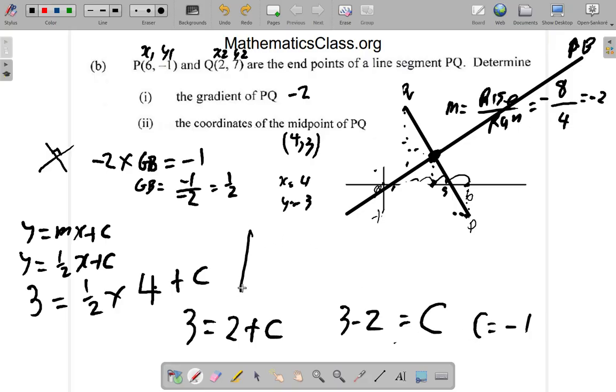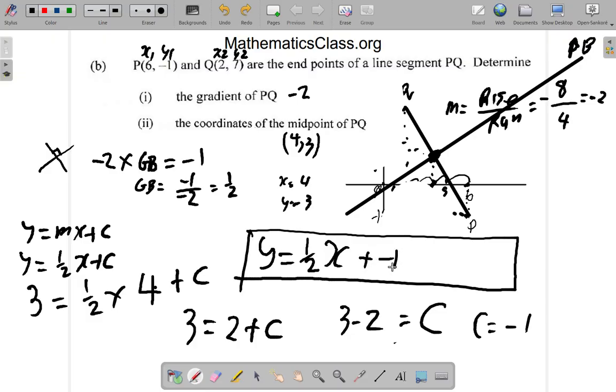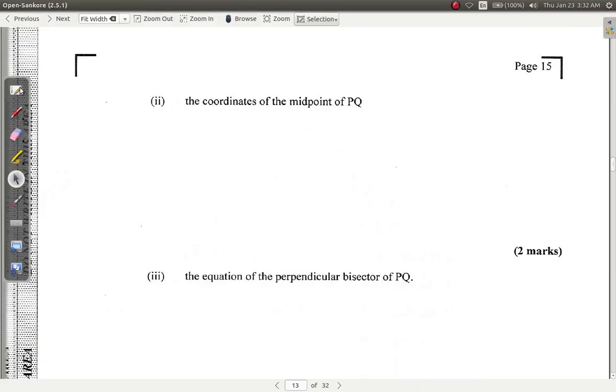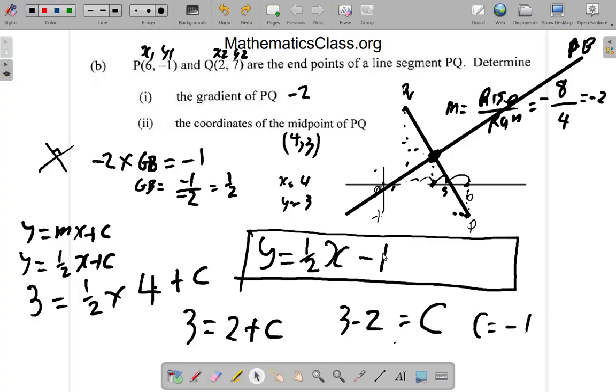So the equation is going to be, remember the equation, X and Y are variables, they vary, they keep changing, so you're not going to write any specific number for X and Y. So you just write Y is equal to the gradient, which is a specific number, is a constant, 1/2 of X, plus C, plus... wait, C is 1. So Y is equal to 1/2 X plus 1 is the equation. Is the equation. Remember what they wanted you to do is the equation of the perpendicular bisector. So the equation is Y is equal to 1/2 X plus 1.